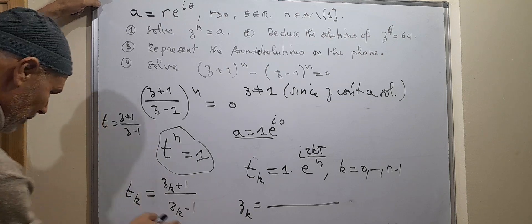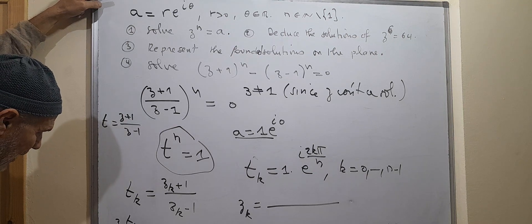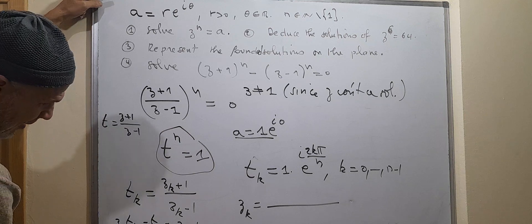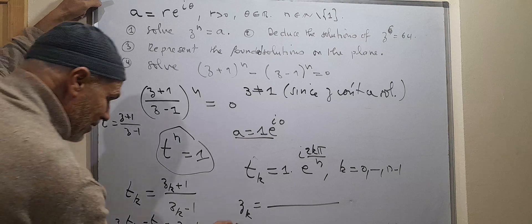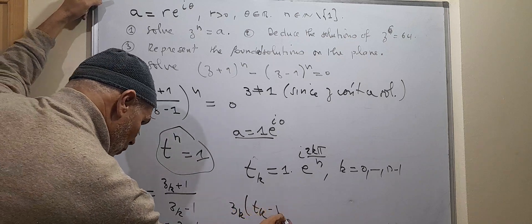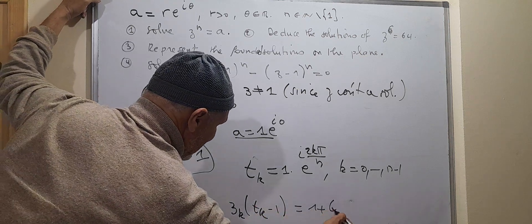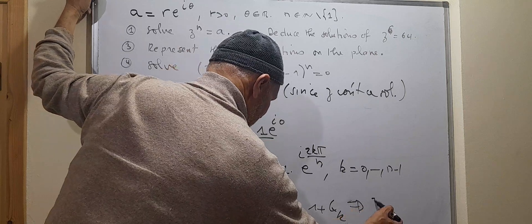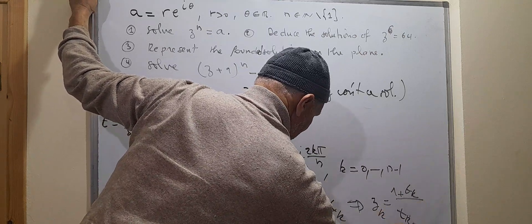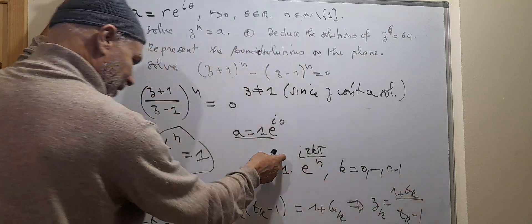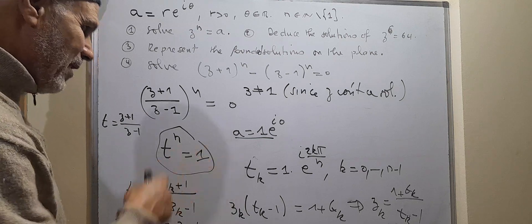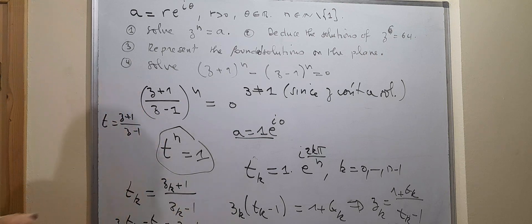We now back-substitute. From t_k = (z_k + 1)/(z_k − 1), we solve for z_k: multiplying out gives z_k·t_k − t_k = z_k + 1, so z_k(t_k − 1) = 1 + t_k, and therefore z_k = (1 + t_k)/(t_k − 1). Replacing t_k by its value gives us the final solutions. This can be simplified further, but this form is sufficient.